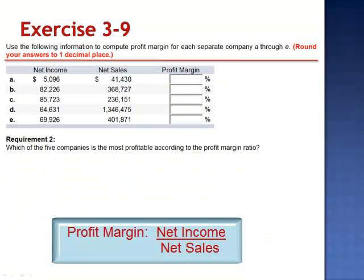For letter A, we take 5,096 divided by net sales, 41,430. The profit margin is 12.3%.